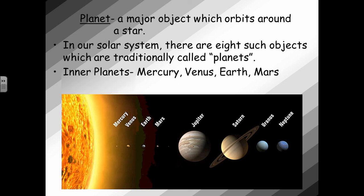Inner planets are Mercury, Venus, Earth, Mars, meaning they're closer to the sun. And outer planets are Jupiter, Saturn, Uranus, and Neptune, meaning they are farther away from the sun.